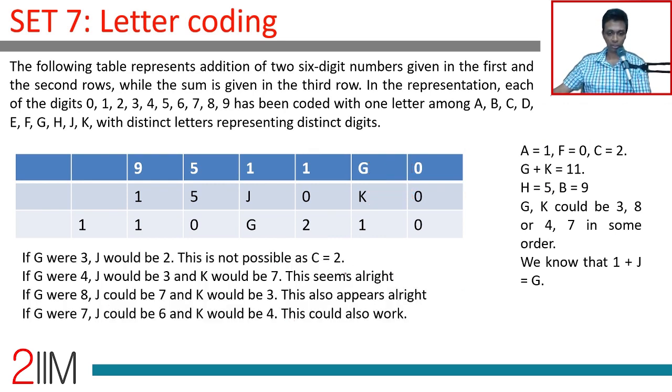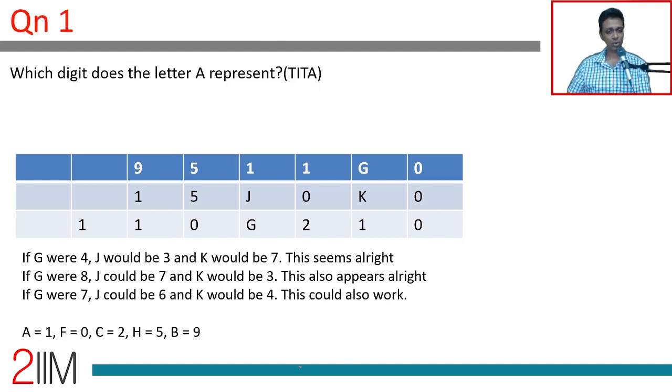Brilliant. So this is not possible. 4, 3, 7 is possible. 8, 7, 3 is possible. 7, 6, 4 is possible. And we've got most of this. And we've got a couple of three combinations for G, K, J. Let's go and answer this question.